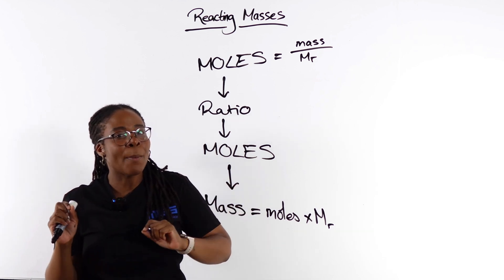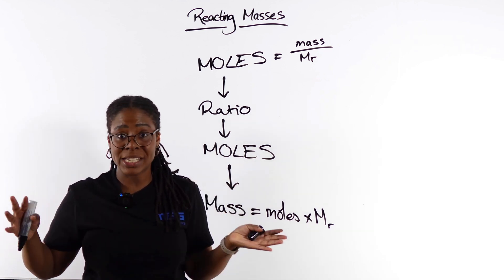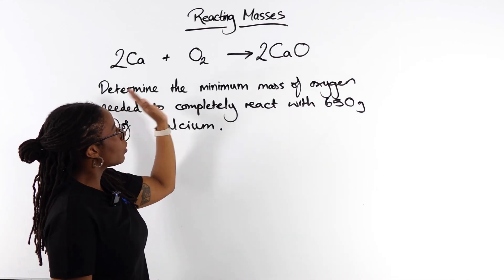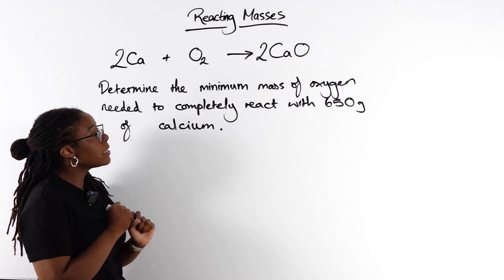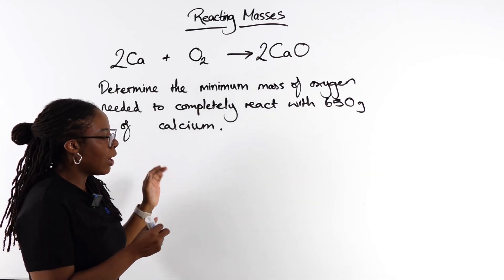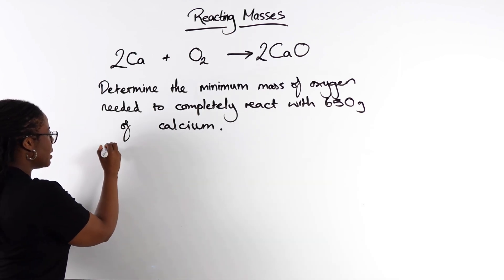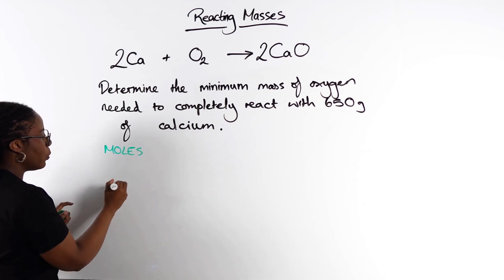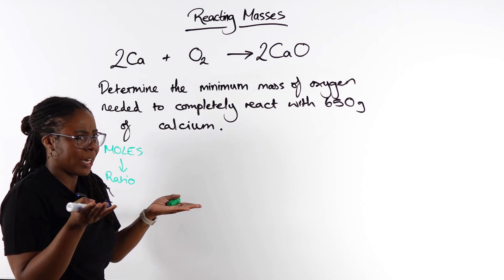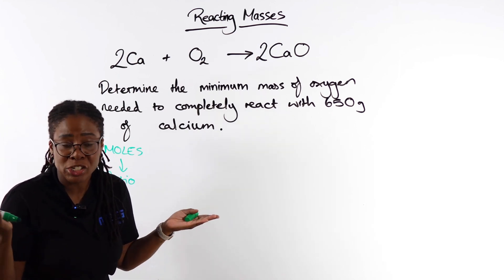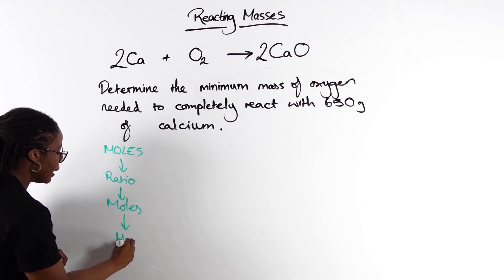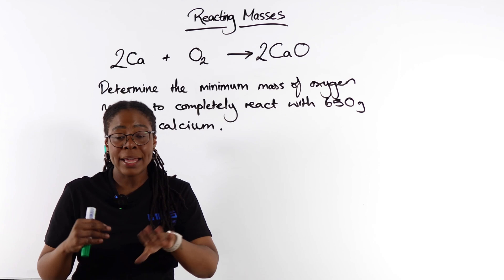Let's do a couple of examples. We'll start with a simple one, probably familiar from GCSE, then do a trickier one. Example one: we're given the equation for the reaction between calcium and oxygen. We need to determine the minimum mass of oxygen required to completely react with 650 grams of calcium. Our steps: calculate moles, use the balanced symbol equation to determine the ratio, find moles of the other species, then calculate the mass.